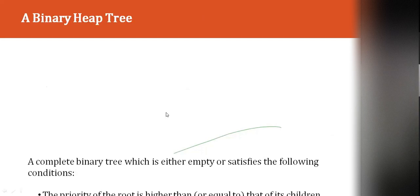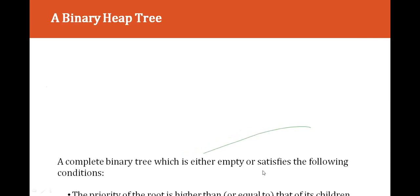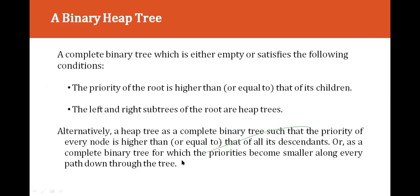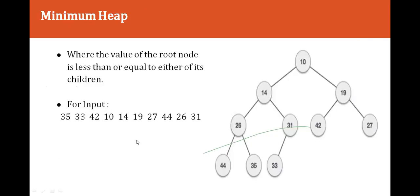In a binary heap tree, the priority of the root is higher or equal to that of its children. The left and right subtrees of the root are themselves heap trees. Alternatively, a heap tree is a complete binary tree such that the priority of every node is higher or equal to that of its children.